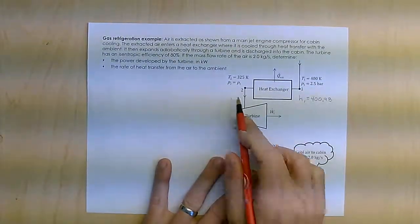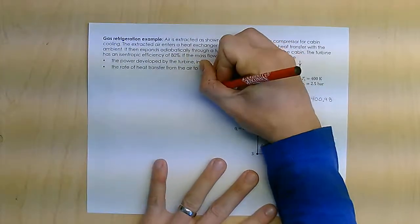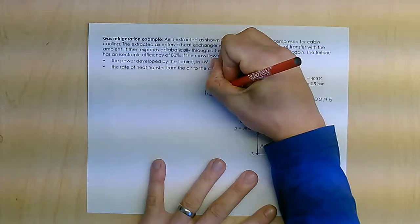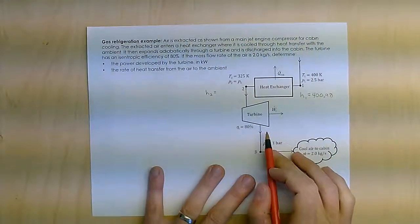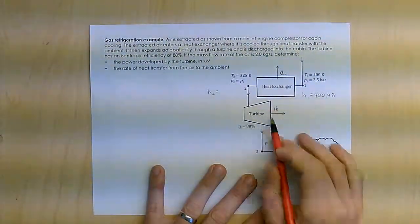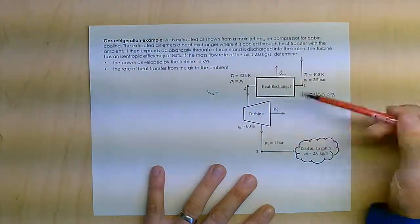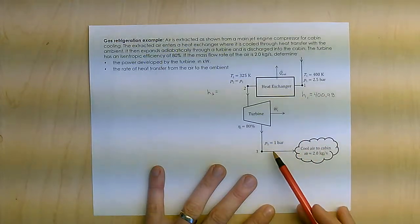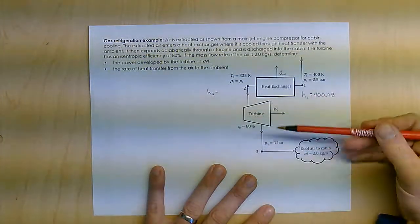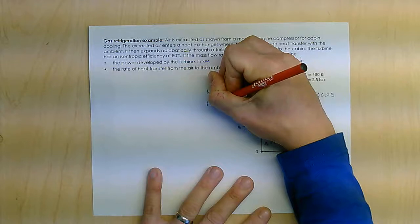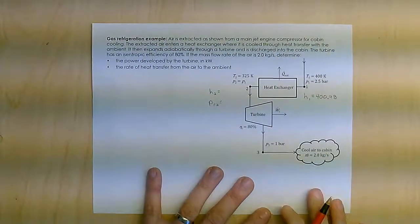Then at state 2 is the turbine. Now, not only am I going to need to know H2, but to deal with the turbine, I need to deal with the isentropic efficiency. And remember, basically I know my pressure ratio here. It's basically 2.5. So I'm going to use the pressure ratio along with the relative pressure ratio to figure this stuff out.